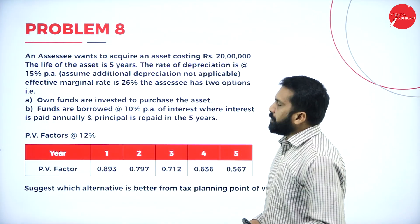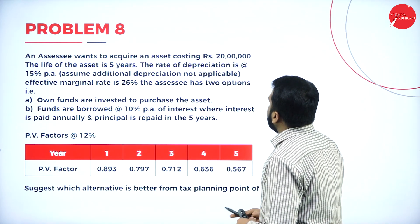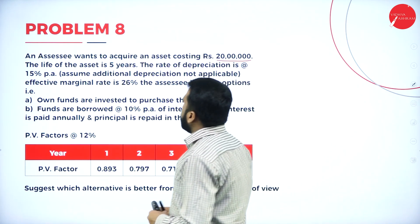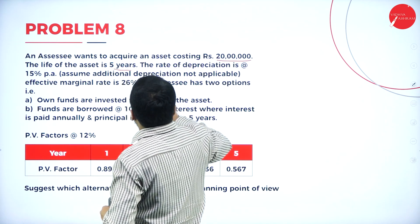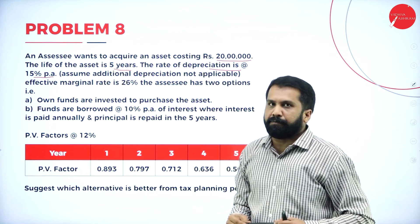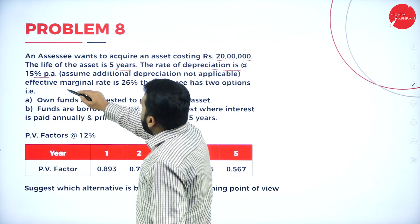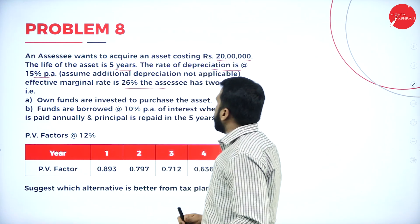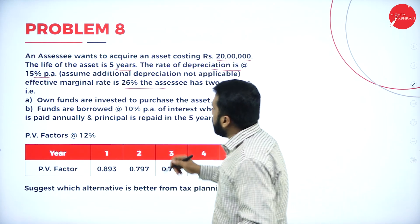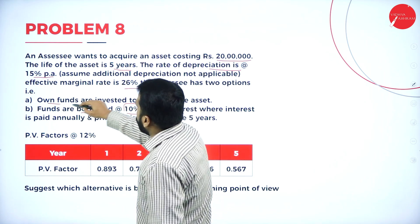These are the informations we have. An assessor wants to acquire an asset costing rupees 20 lakh. The life of the asset is 5 years. The rate of depreciation is 15%. Assume additional depreciation is applicable. Effective managerial rate of taxes is around 26%. They have two options: first option will be 10% per annum as borrowed fund or as own fund.